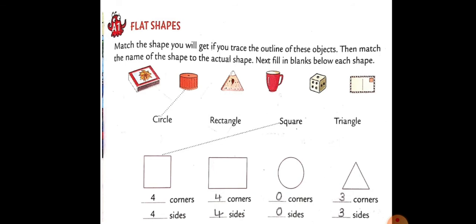A1: Flat shapes. Match the shapes you will get if you trace the outline of an object, then match the name of the shape to the actual shape. Next, fill in the blanks below each shape — square, rectangles, circle, triangle — and identify corners and sides for each.